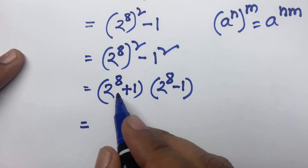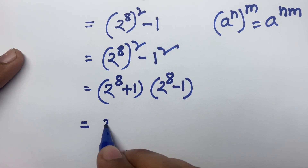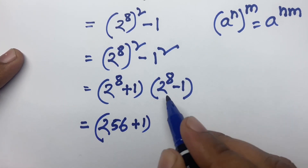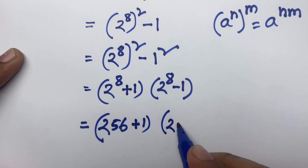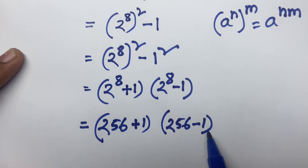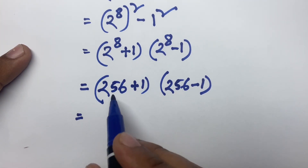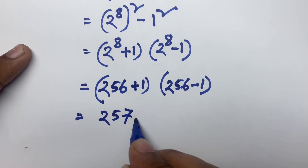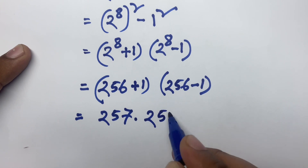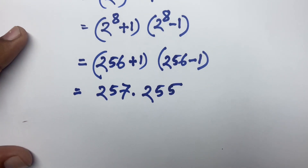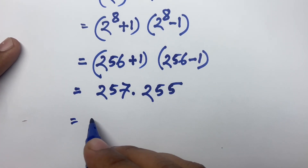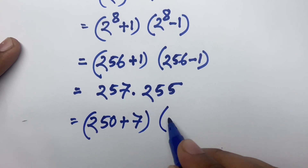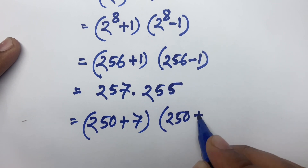Now 2 to the power 8 equals 256, so we have 256 plus 1, and 2 to the power 8 equals 256, so we have 256 minus 1. That gives us 257 times 255, which is 250 plus 7, times 250 plus 5.